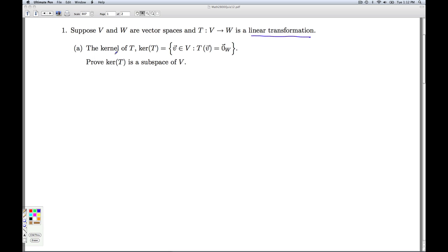In part A, the kernel of T is defined to be the set of all vectors V in V so that T of V is the zero vector in W. These are the things in V that get sent to zero. We're asked to prove that the kernel of T is a subspace of V.